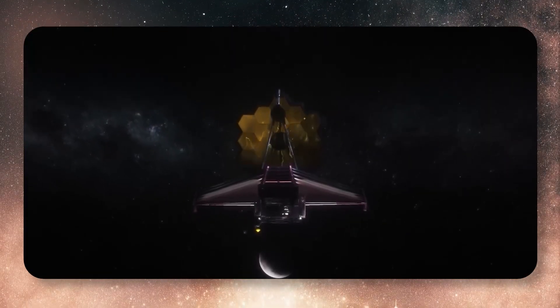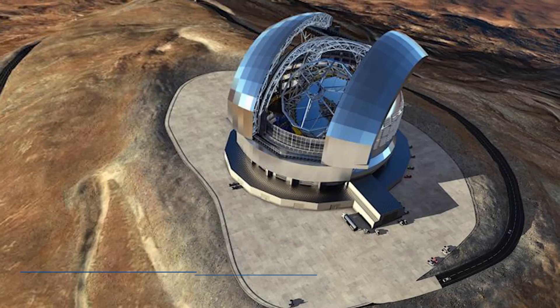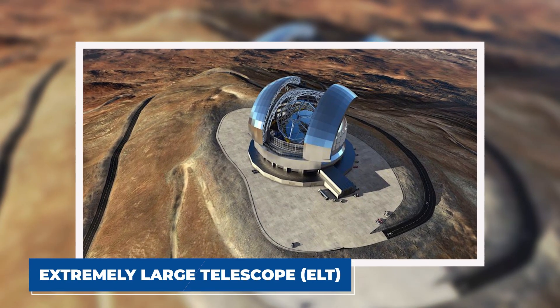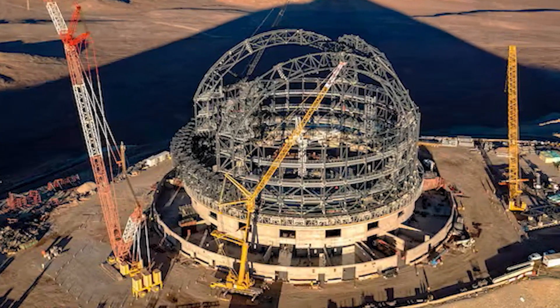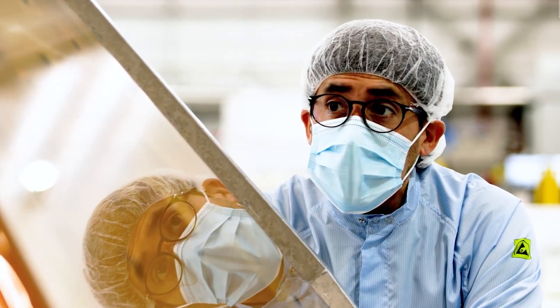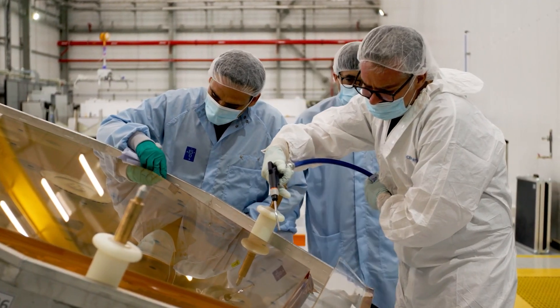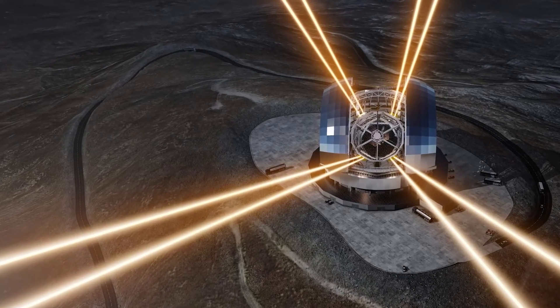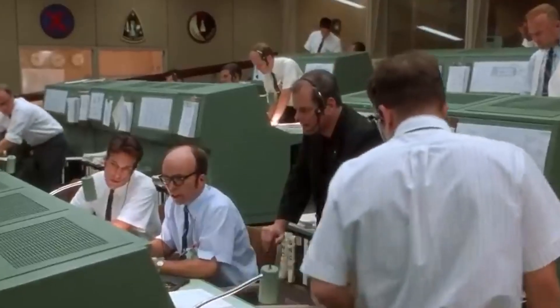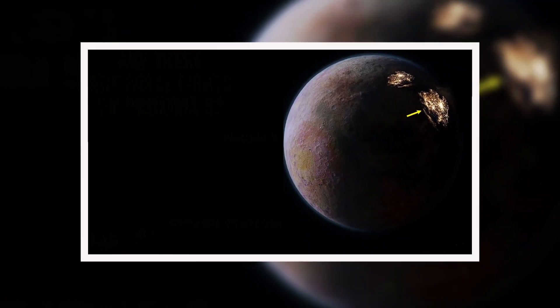The James Webb Space Telescope is incredibly precise, but it has its limits. That's where the Extremely Large Telescope, ELT, comes in. Scheduled to start observing in 2028, the ELT will have a mirror nearly 40 meters across, making it the most powerful telescope of its kind. It will be able to capture even finer details of the planet's atmosphere and surface.